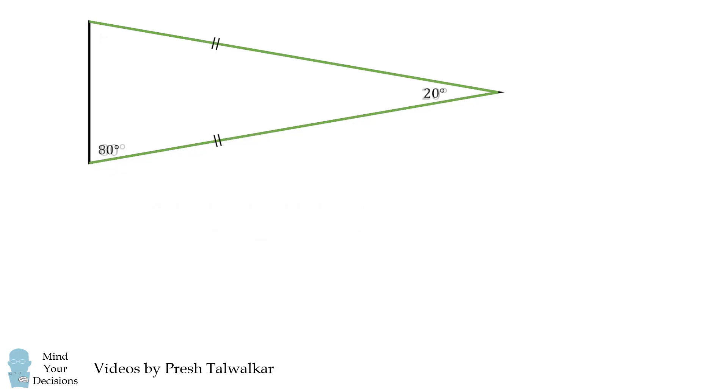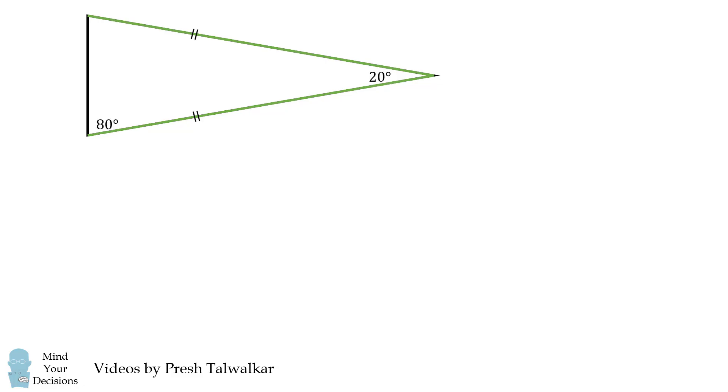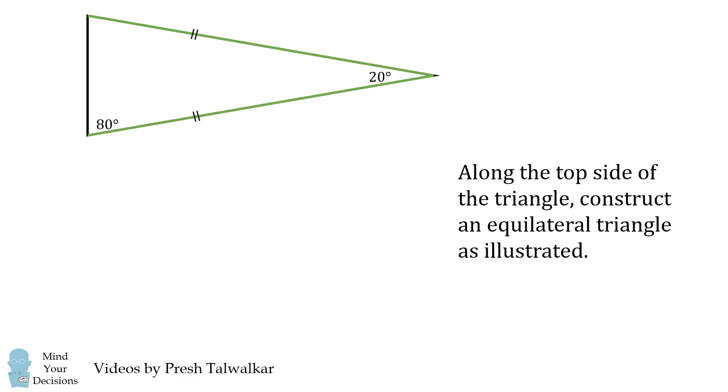Now let's zoom out a little bit and here's the clever trick. Along the top side of the triangle construct an equilateral triangle as illustrated, so all of these side lengths have equal length to the green side.